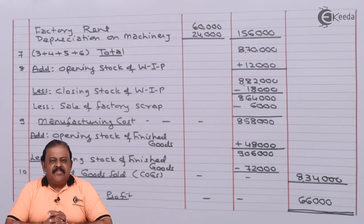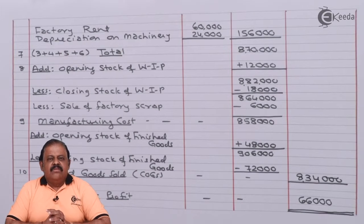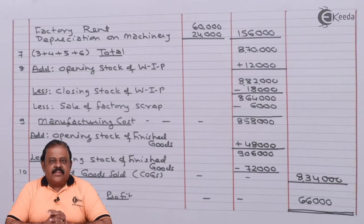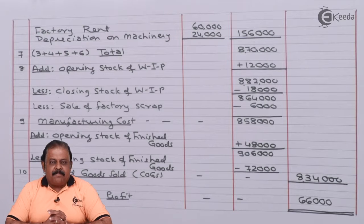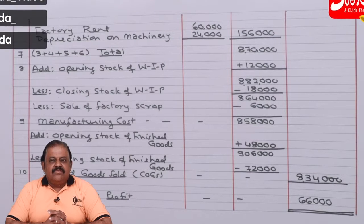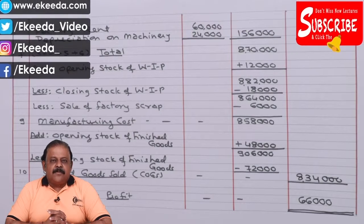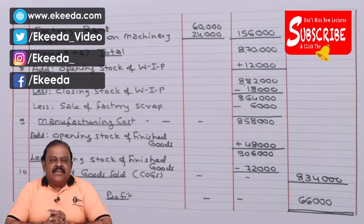We must be very careful while calculating raw material consumed, adding other direct costs, factory expenses, and items relating to work in progress or scrap. Thanks for watching this video. Stay in tune with Ikita and subscribe to our channel Ikita.